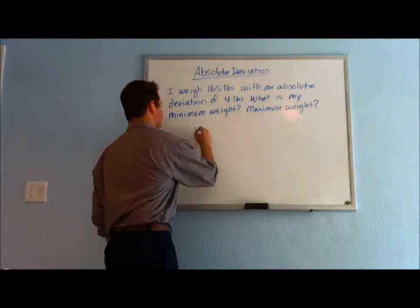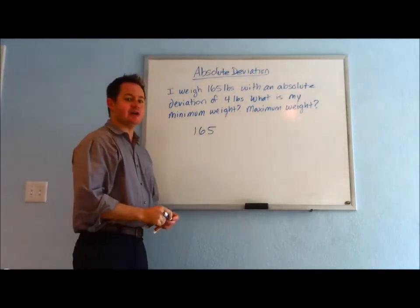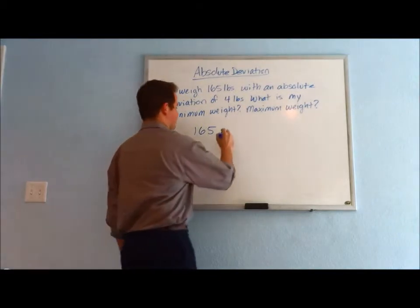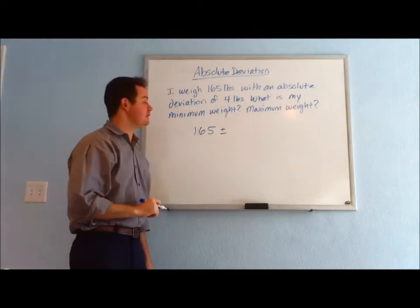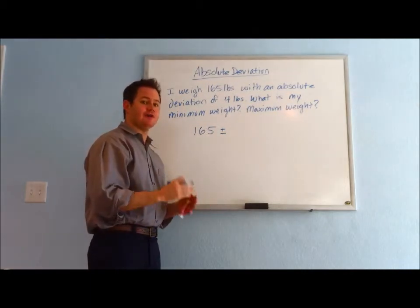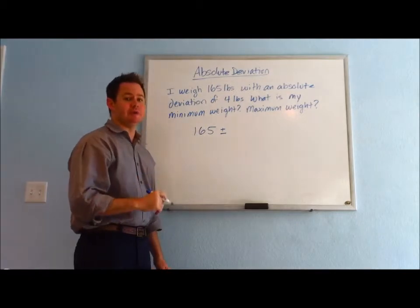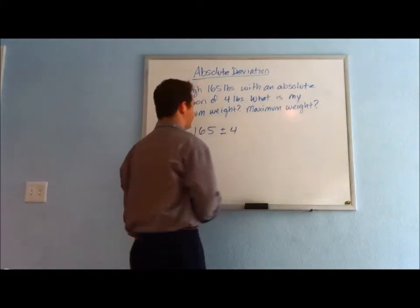In this case, the way we would write that as an equation is 165 plus or minus the absolute deviation. Absolute deviation tells you how far off your known value you might be. So that could be plus or minus 4.